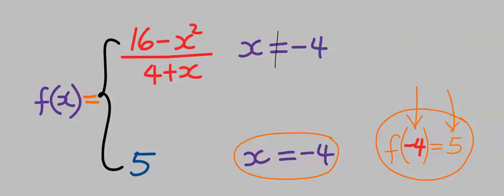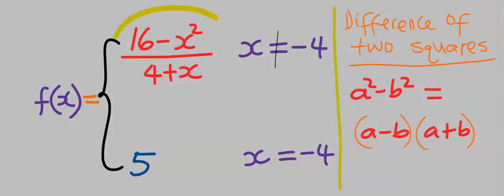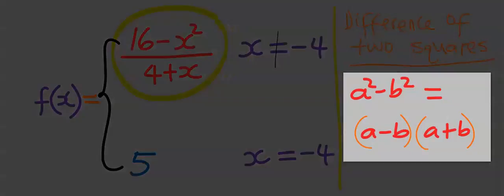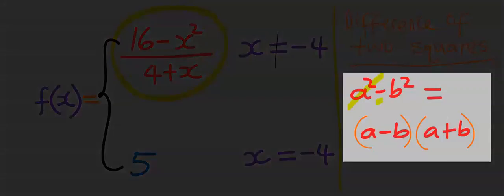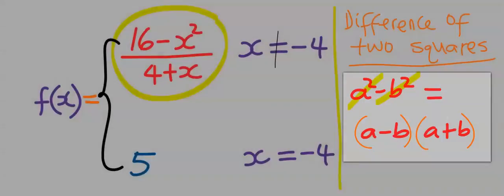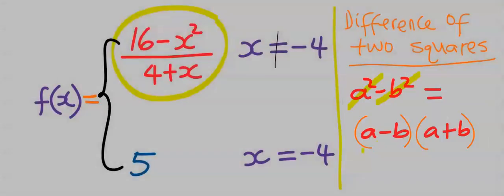We just know the answer, but we are not given the function. Let's solve the left-hand limit using difference of two squares. a² - b² equals (a - b)(a + b).